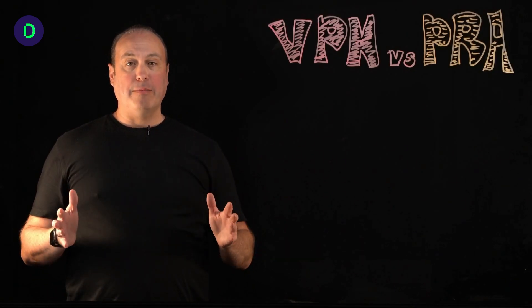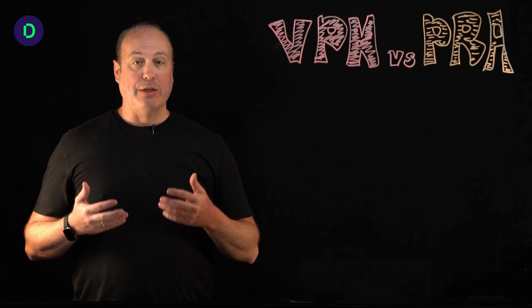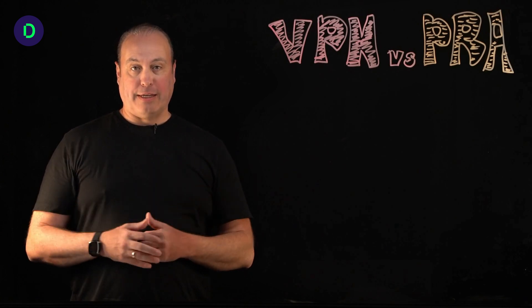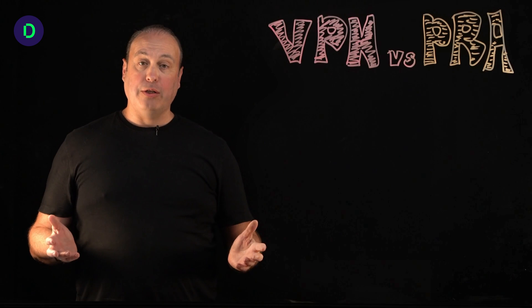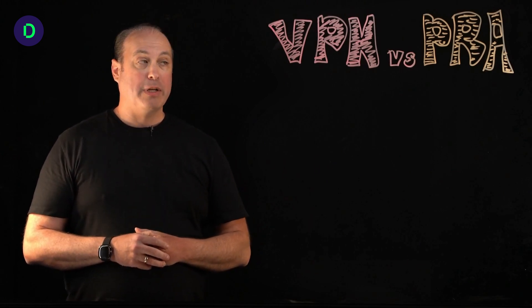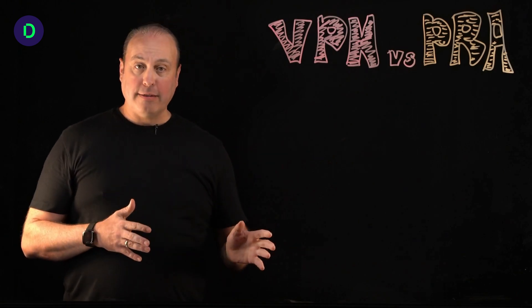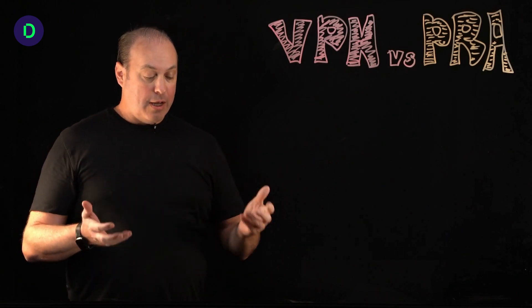Hello, I'm Jeff Carpenter with Delinea, here today to talk about some of the shortcomings of a tried and true remote access technology called VPN, and what leading organizations are doing to address some of those concerns. We're going to call this discussion VPN versus PRA. PRA is Privileged Remote Access, and that's a Delinea solution. Let's jump right in and see how this works.